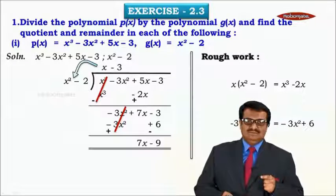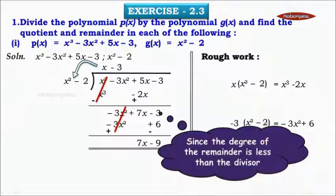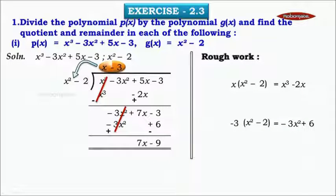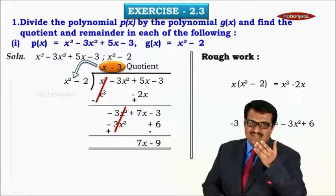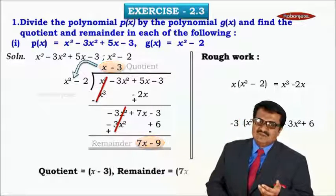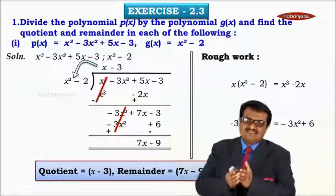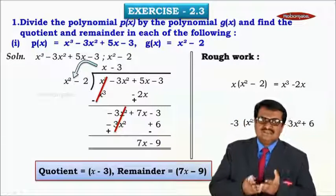Now observe: the degree of the remainder we got, 7x minus 9, is 1, which is less than the degree of the divisor x² minus 2, which is 2. Since the degree of the remainder is less than the degree of the divisor, we stop the division. Therefore, the quotient is x minus 3 and the remainder is 7x minus 9.